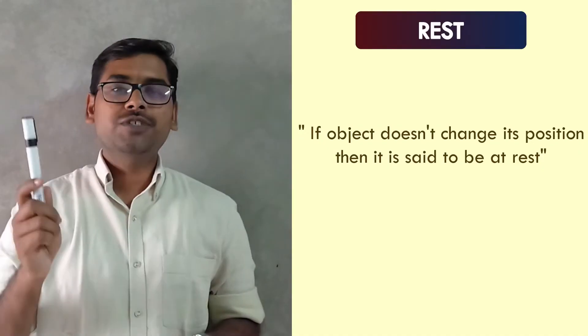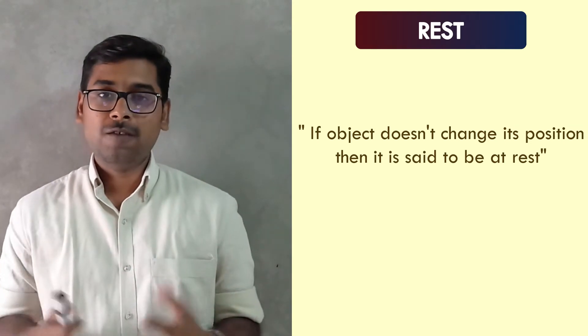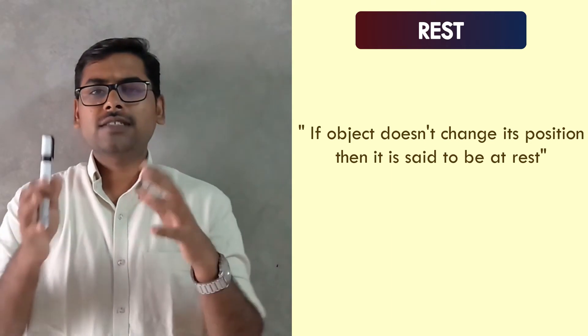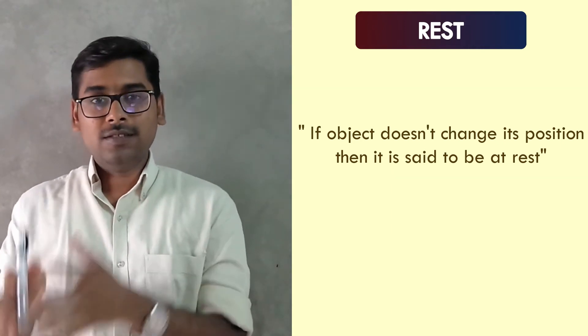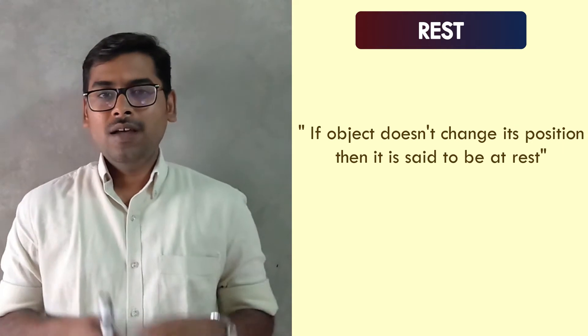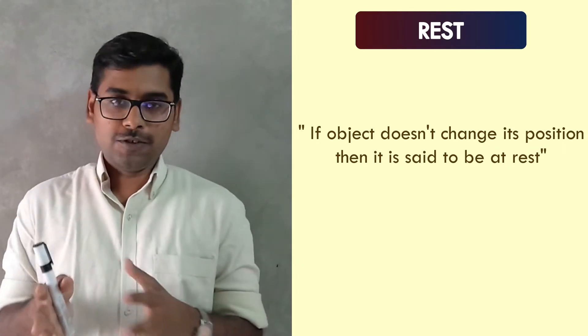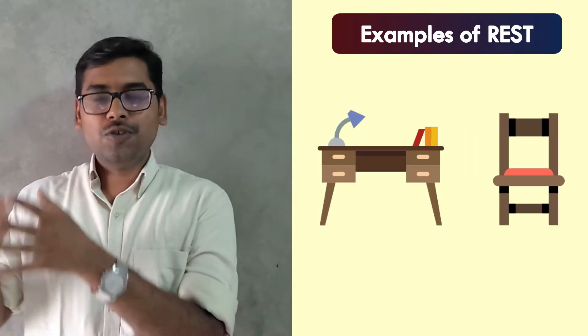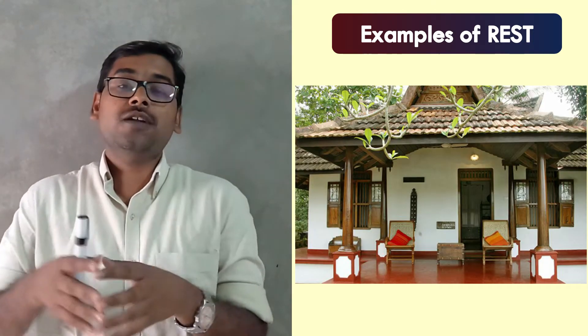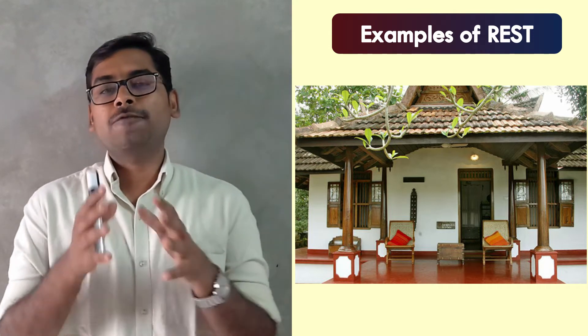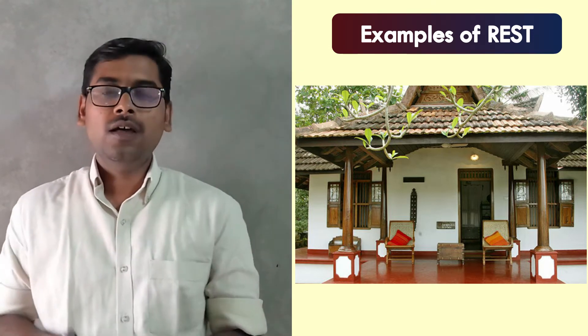Naturally, one more question arises: what do we say if an object does not change its position with time? We say that object is at rest. For example, this wall behind me is not changing its position with time, so it is at rest. If you look around yourself, you will find several examples: the chairs and tables in your house are at rest, and in fact your house is at rest because it does not change its position with time. One thing to note is that these definitions of motion and rest are the basic definitions, not the complete definitions.